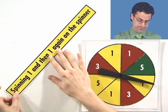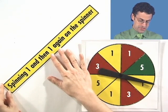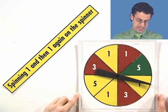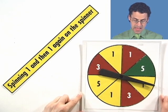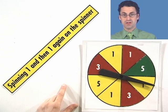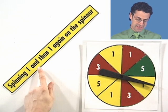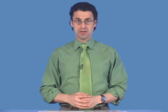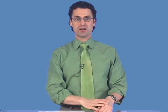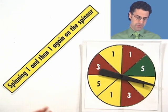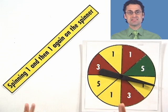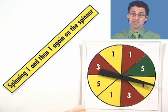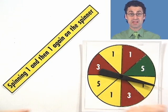Here is the question: what's the probability of spinning a one and then a one again on the spinner? Notice this is a question that has an 'and' in it — doing something and also doing something else. You don't just have to get through the first hoop of getting a one; you also have to get through the second hoop. Probabilities involving two events with an 'and' are actually going to be less likely — more restrictive because you have more conditions.